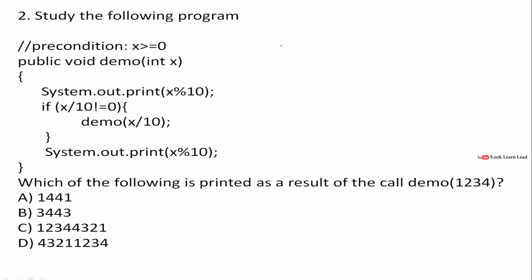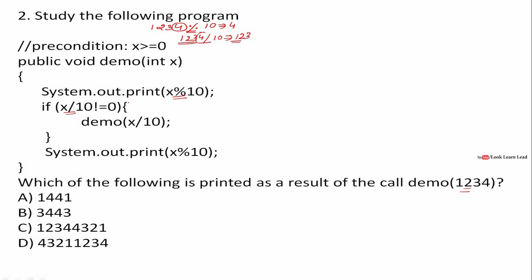In this pseudocode we have two terms: x mod 10 and x divided by 10. Our input is 1234. The concept here is: when you take 1234 mod 10, it gives us the last digit. And 1234 divided by 10 gives the remaining digits except the last one. So mod 10 output would be 4, and divide by 10 output would be 123.